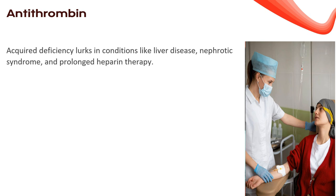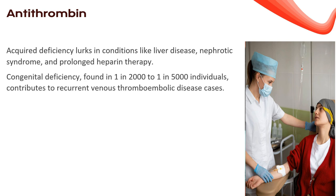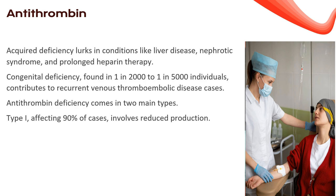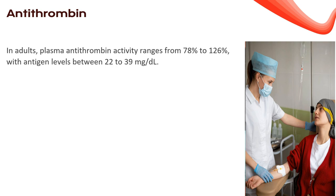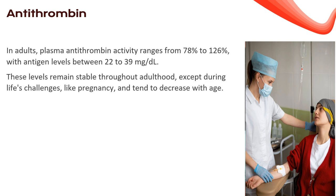Acquired antithrombin deficiency lurks in conditions like liver disease, nephrotic syndrome, and prolonged heparin therapy. Congenital deficiency — found in 1 in 2,000 to 1 in 5,000 individuals — contributes to recurrent venous thromboembolic disease. Type 1 (90% of cases) involves reduced production; Type 2 (10%) stems from mutations causing structural abnormalities. In adults, plasma antithrombin activity ranges from 78% to 126%, with antigen levels between 22–39 mg/dL. These levels remain stable throughout adulthood, except during pregnancy, and tend to decrease with age.